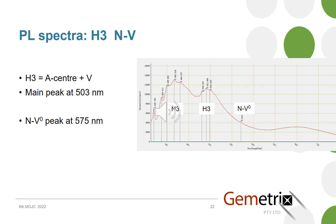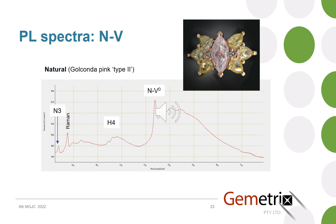The nitrogen vacancy peak is not an indicator of CVD on its own, as it's possible to see it even in a natural diamond. This example shows the N3 centre, also an H3 which is a vacancy-related defect, and then the NV which I mentioned. Here's one from a Golconda pink, which is a mine in India. They're notionally a type 2 diamond, but you'll see it does have a small amount of N3 and also H3 fill, curiously.